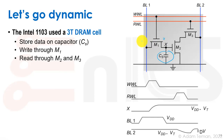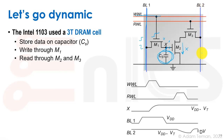To write, you put your data — either 1 or 0 — on the bit line, then use the write word line to open M1, and get your data onto CS. Once stored, M2 is either on or off depending on whether you have a 1 or 0 on CS. Then you pre-charge the bit line and access the read word line. If it's a 1, the bit line discharges; if it's a 0, the bit line is not discharged.